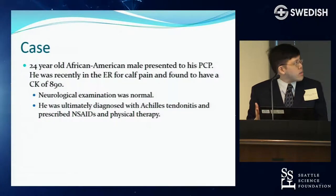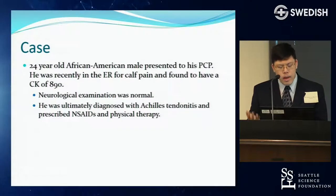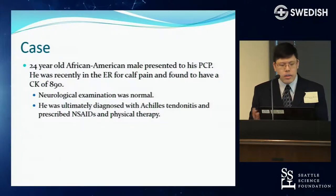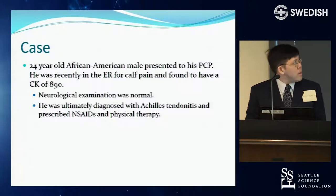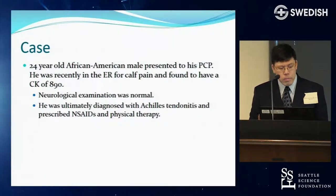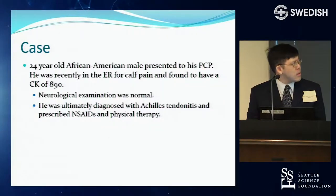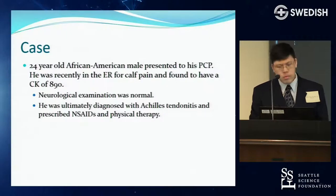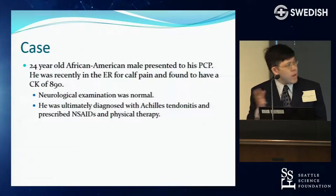Here's a classic case: a healthy patient presenting to their PCP with calf pain gets their CK checked incidentally, and it's 890 — elevated per the lab. They have a normal neuro exam, and it turns out the pain is from Achilles tendonitis. He gets prescribed physical therapy and gets better. So what do you do with that? Let's keep that in mind, go over CK, and come back to it.